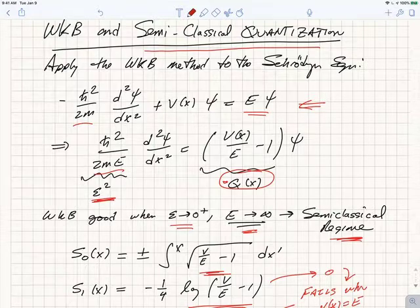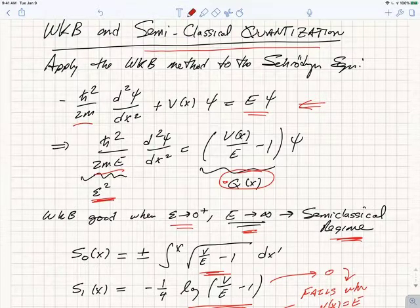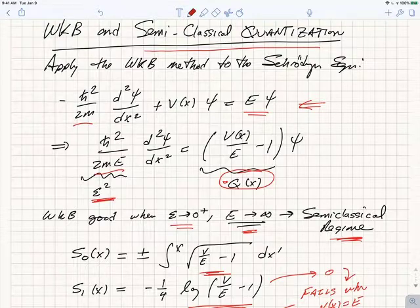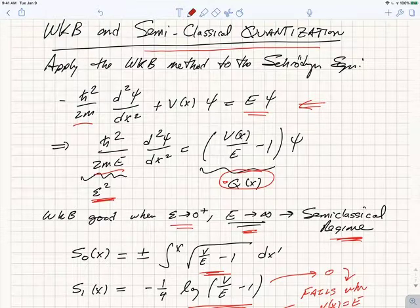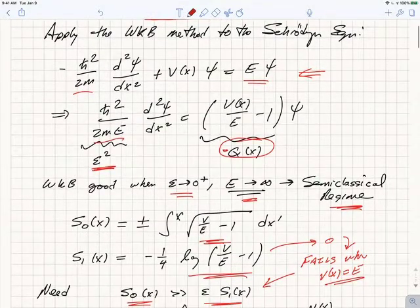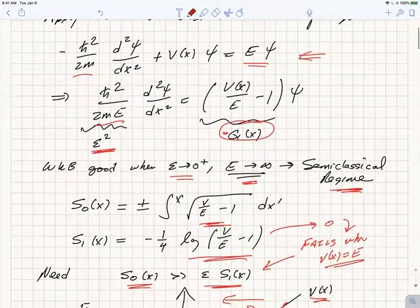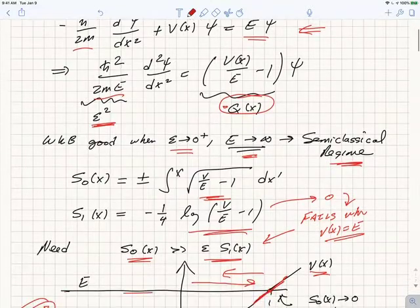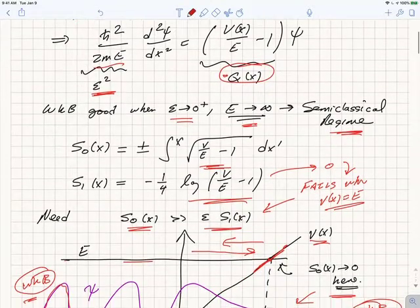What we'll see is that the WKB method gives surprisingly accurate results even for relatively low energies. For example, for the harmonic oscillator, the semi-classical approximation will actually give us exact results, which is unusual.